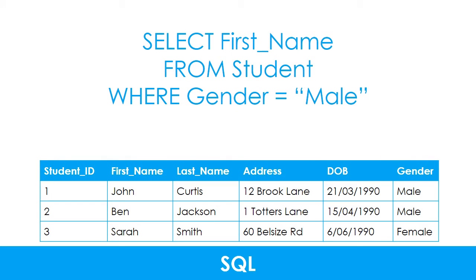Structured query language, or SQL, is the language used to search databases. Here is an example SQL query. The SELECT statement is used to choose which field you want to show. In this example, it's the first name field. The FROM statement is used to state which table you want to get your data from — in this case, it's the student table. And the WHERE statement is used to filter the results. Here, we want to show all records where the gender is male.